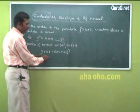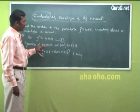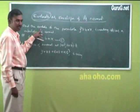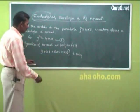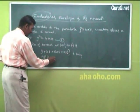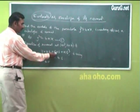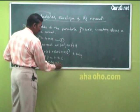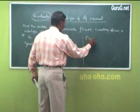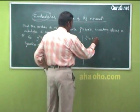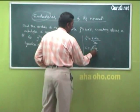Given y² = 4x. The equation of the normal to the parabola at point (at², 2at) is: y = tx - 2at - at³, which is the equation of the normal with parameter t.